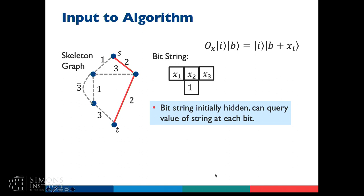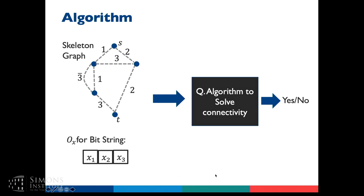Quantum mechanically, we're given an oracle that allows us to ask what the value of bit i is, returning that information in a quantum standard basis state, but also allowing us to ask this question in superposition for all elements of the input string. From here on, I'll assume we have a black box algorithm that solves this problem. I'm just going to treat this like an algorithmic primitive — not opening up the box — and ask: given this primitive, what types of problems can we solve with it, and how well does the quantum algorithm behave?